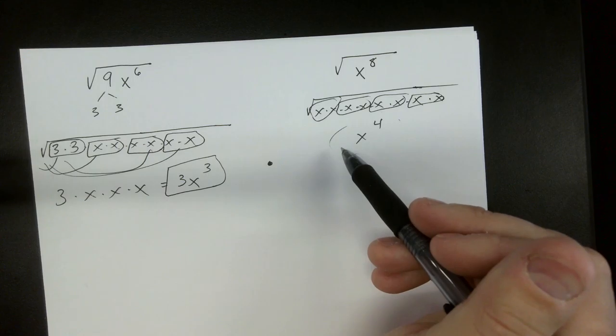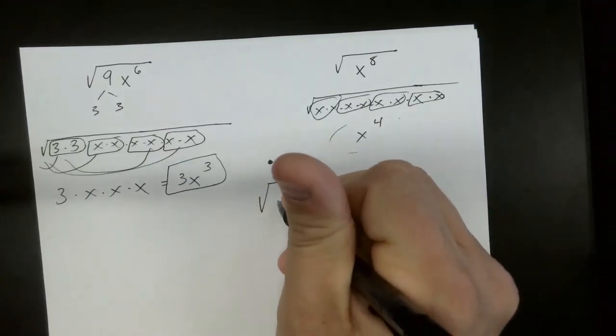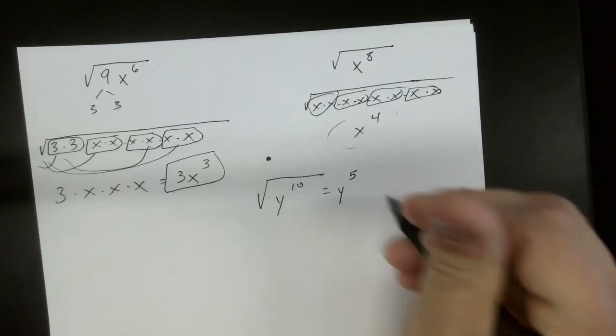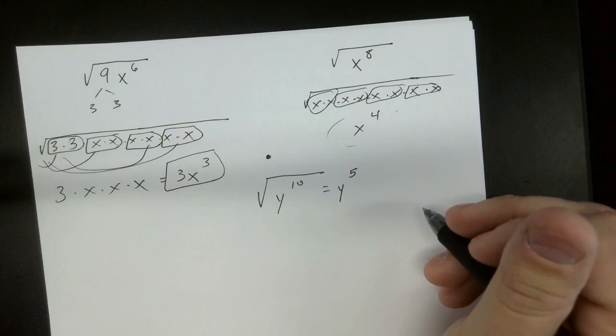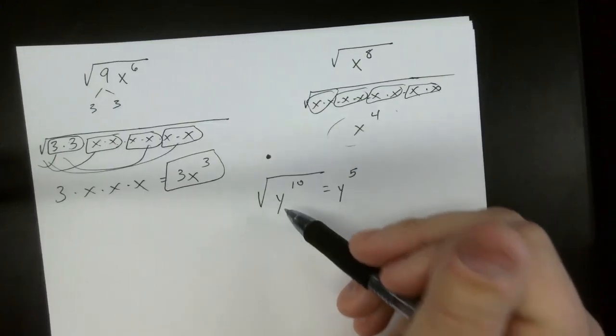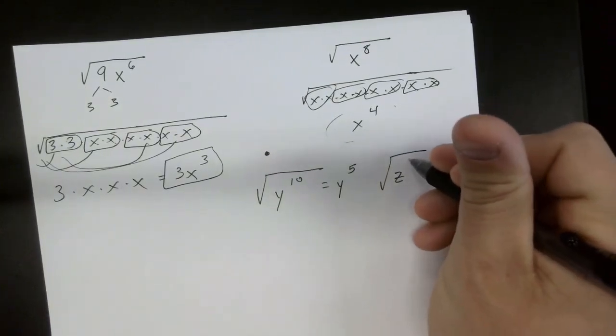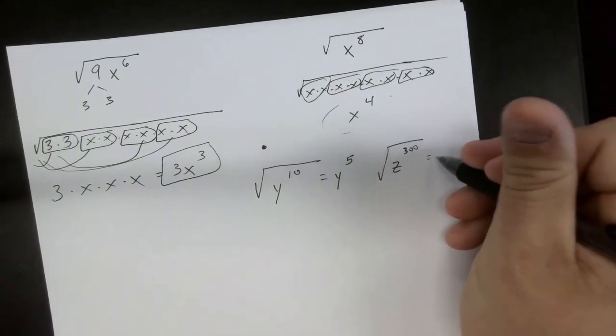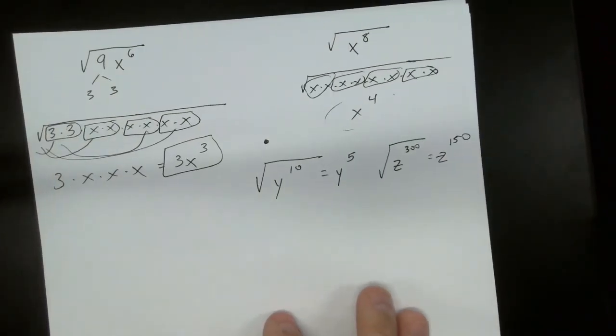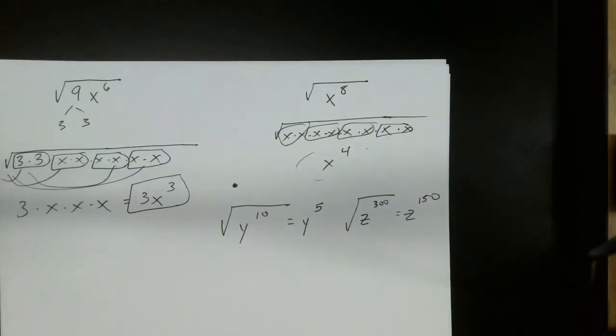So variables can be easily simplified. If we happen to have the square root of y to the 10th, what would that equal? Y to the 5th. So basically, if they're an even exponent, it's extremely easy. If we have the square root of z to the 300th, it'd be z to the 150th.